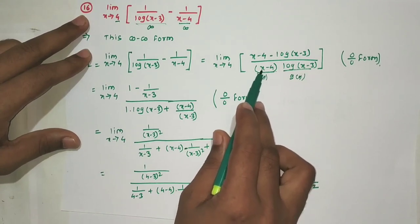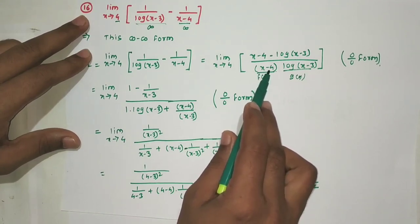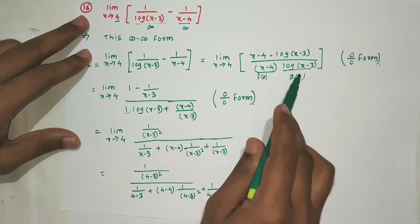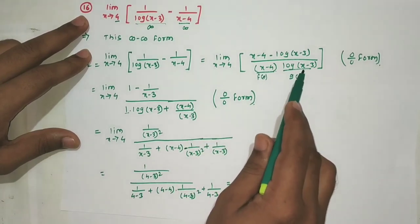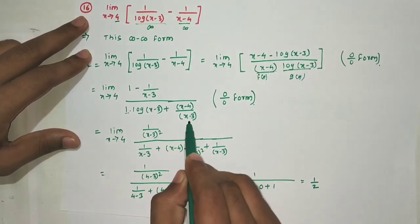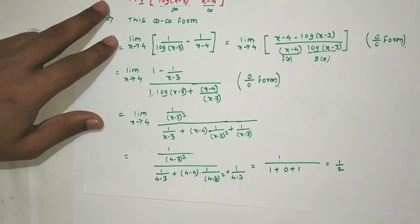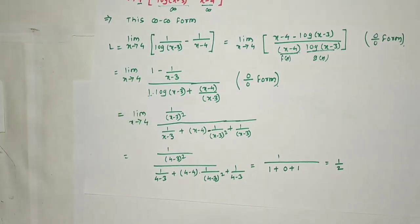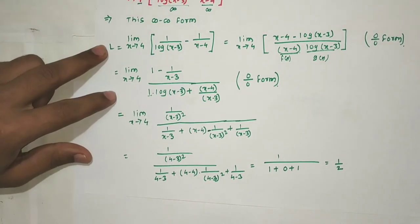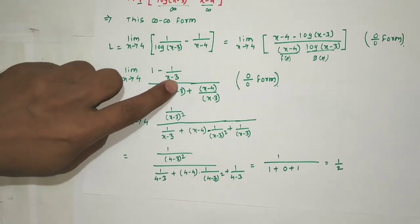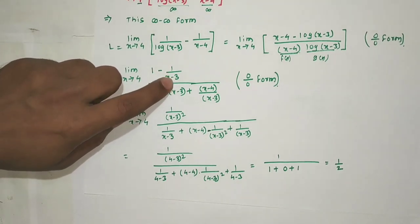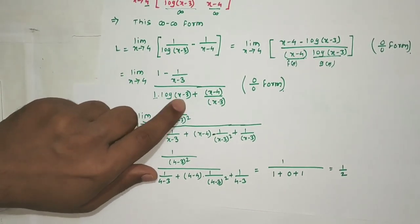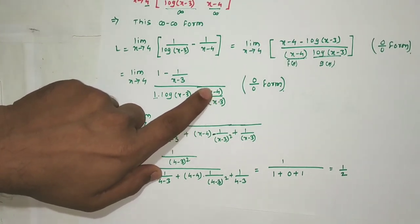Derivative of the denominator using product rule: (x-4)·(1/(x-3)) + log(x-3)·1. Putting x=4 in the full expression: numerator gives 1 - 1/(4-3) = 1 - 1 = 0. Denominator: (4-4)·(1/(4-3)) + log(1) = 0·1 + 0 = 0. Still 0/0 form, so we apply L'Hôpital's rule again.